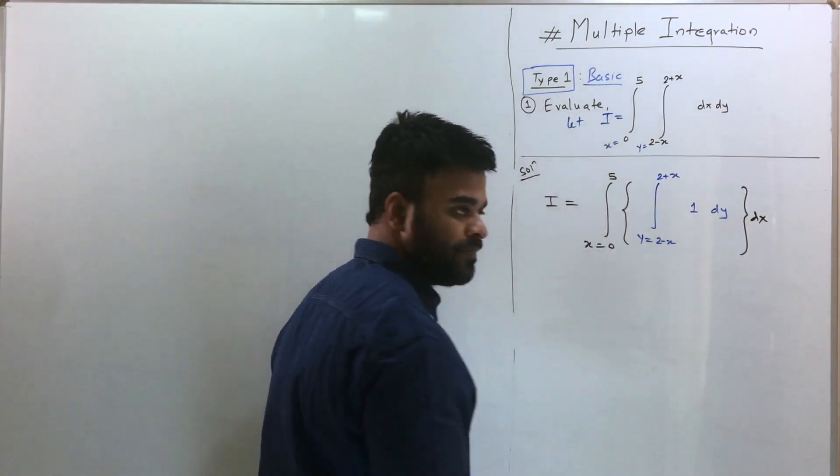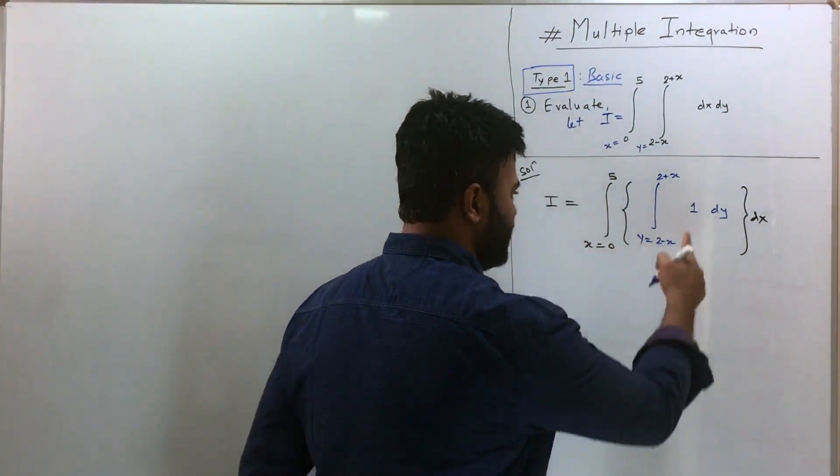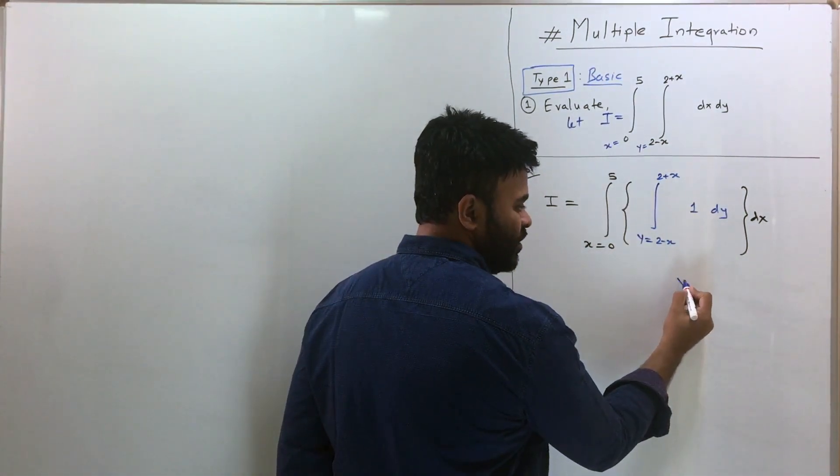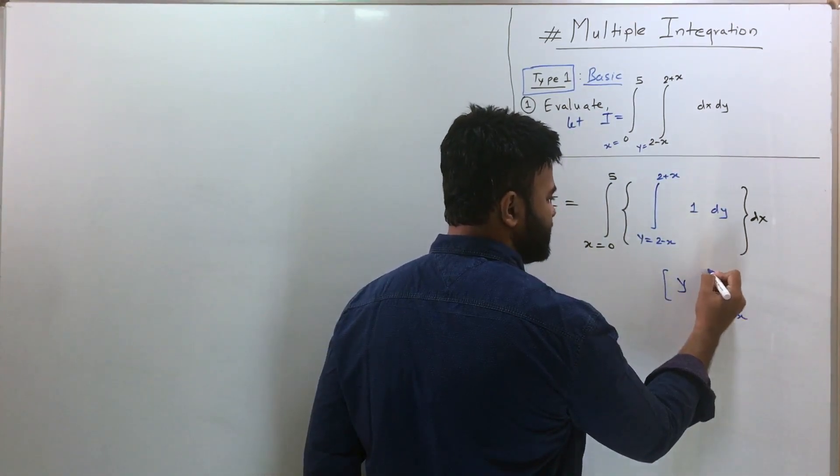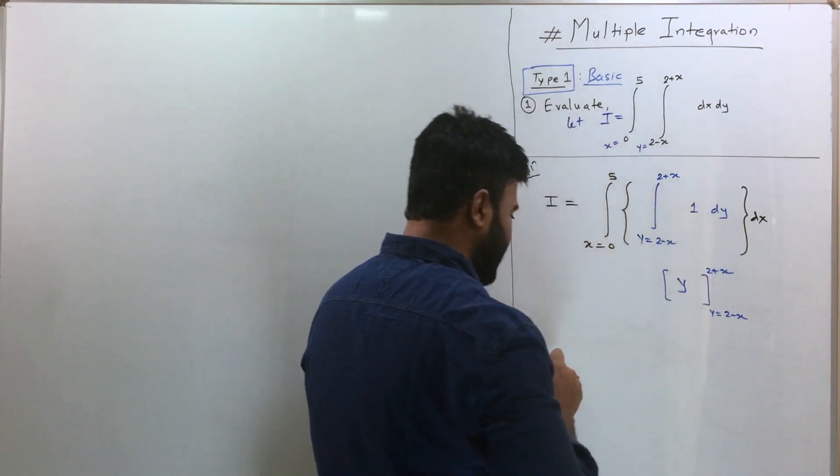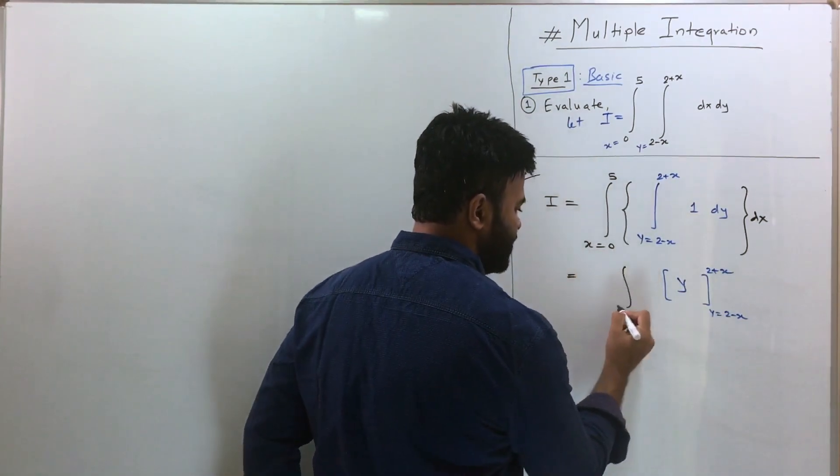Let's evaluate this integral. The integration of 1 is going to be Y and limits will go from 2 minus X to 2 plus X. The outer integral will remain as it is, so you have X is equal to 0 to 5 dx.